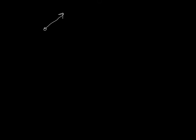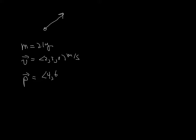Let's do a simple example. Suppose we have a rock flying through the air with some initial velocity. Give it a mass of 2 kilograms and an initial velocity vector of (2, 3, 0) meters per second. First, let's calculate its initial momentum: mass times velocity gives (4, 6, 0) kilogram meters per second. Let's watch it for a short period of time — delta T equals 0.01 seconds — and ask: what's its new momentum, new velocity, and how far has it moved?